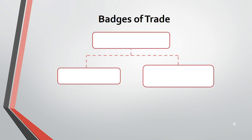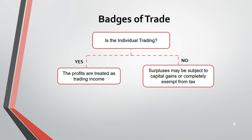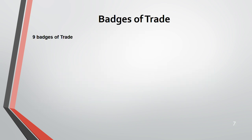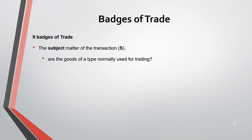Now we move on to badges of trade. You must determine whether an individual is trading or not. If yes, the profit is assessed as trading income. If no, capital gains tax may apply, or it may be exempt. There are nine badges of trade — nine separate factors. A useful acronym is SOFIRM: Subject matter, Ownership, Frequency, Improvement, Reason for sale, Motive, and Finance.